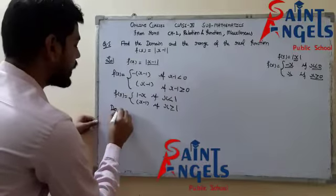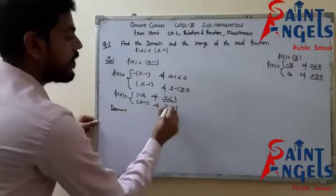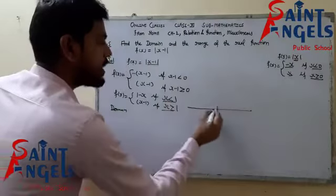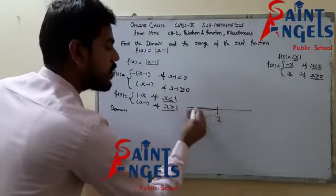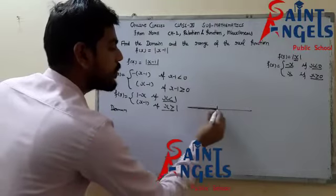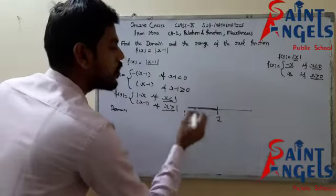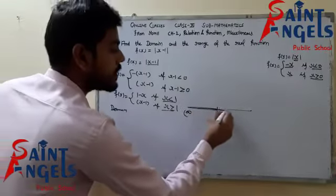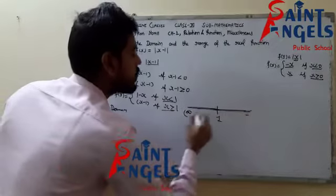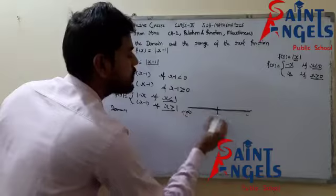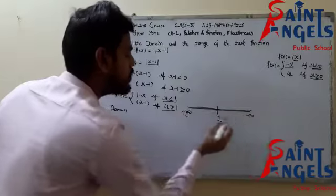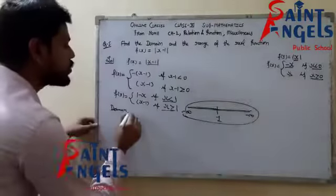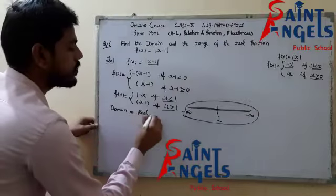Clearly for the domain: the values of x are all values less than 1 (from negative infinity to 1), and all values equal to or greater than 1 (from 1 to positive infinity). So technically I am taking all values of x as real numbers, and the domain is the set of real numbers.